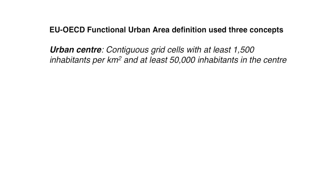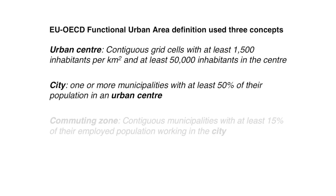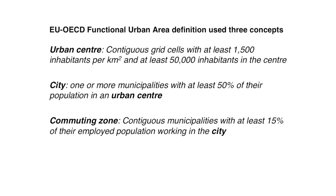We got together with the OECD to create what we call a functional urban area definition. It uses three concepts. The first is an urban center, based on the population grid — we take every grid cell that has at least 1,500 inhabitants and glue it together with other high-density grid cells. In that cluster of grid cells, we need at least 50,000 inhabitants. If that is found, we have an urban center. Once we have that urban center, we need to turn it into a city, so we find all the municipalities that have at least 50% of their population in that urban center — together they form a city. But a city is not independent; it has a lot of economic links with surrounding areas, so we need to create a commuting zone. Every municipality that sends 15% of their employed population to that city is considered part of the commuting zone. City plus commuting zone is a functional urban area.